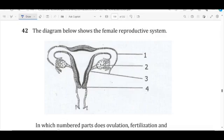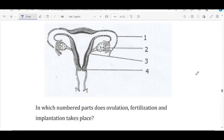The question is, in which numbered parts does ovulation, fertilization, and implantation take place? So they want us to identify in which of these parts ovulation, fertilization, and implantation is going to take place. We must know these parts.